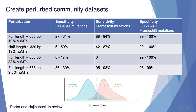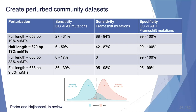This is a summary of all that data. Sensitivity refers to our ability to correctly remove pseudogenes, and specificity refers to our ability to retain gene sequences. Across all perturbed community datasets, specificity was very high, but sensitivity was low when the pseudogenes only contained GC to AT mutations. It was also harder to filter out pseudogenes if they were very short or if they were very prevalent in the dataset.